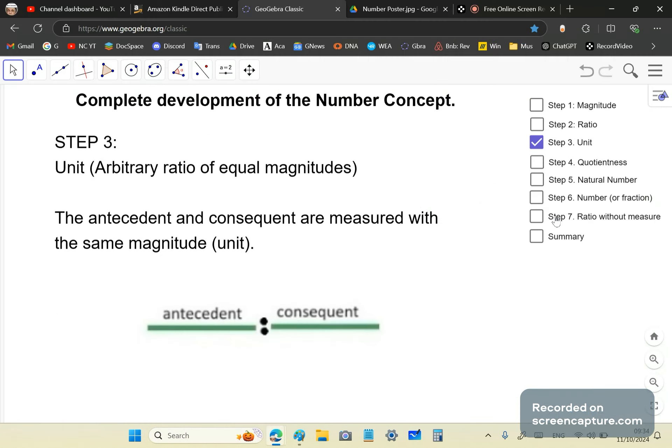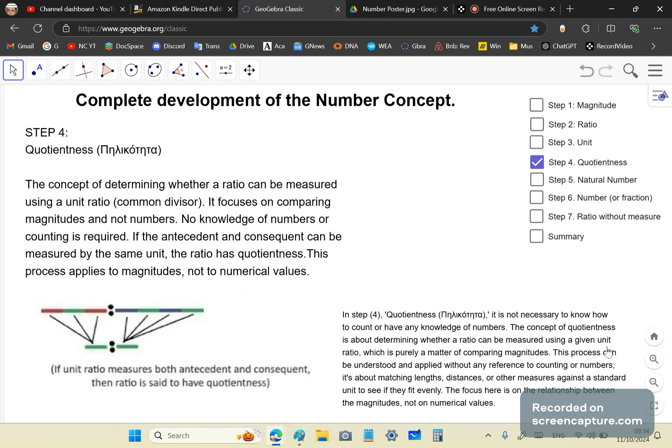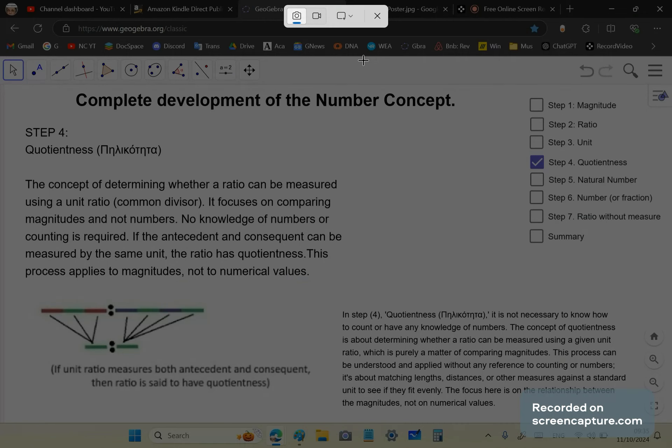The next step is whether such ratios have any relationship. Do they have, for example, a common divisor? That's where step four comes in. That's quotientness. There is no English word for the Greek word that you see here, pilikotita. In fact, it's not even in modern Greek. Piliko is in modern Greek, but pilikotita is not in modern Greek. It comes from definition three of book five of Euclid's Elements. Let's take a bit of time here and explain this properly.